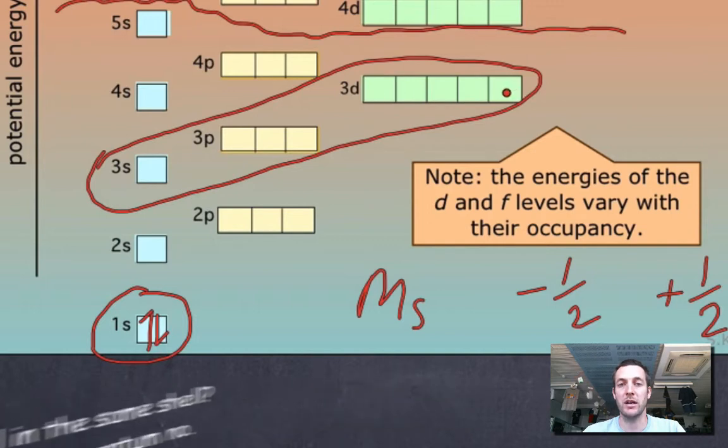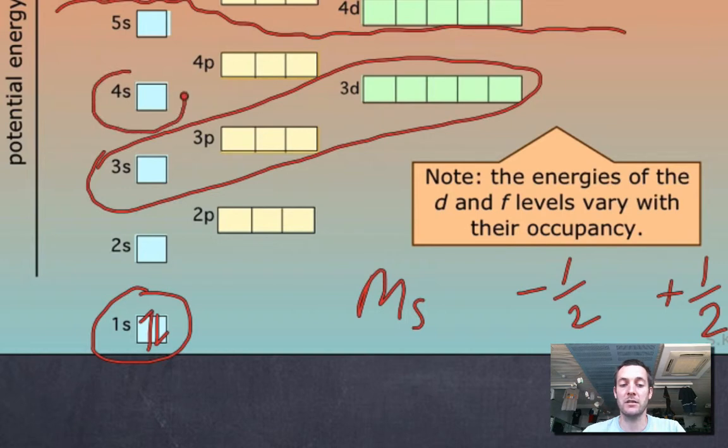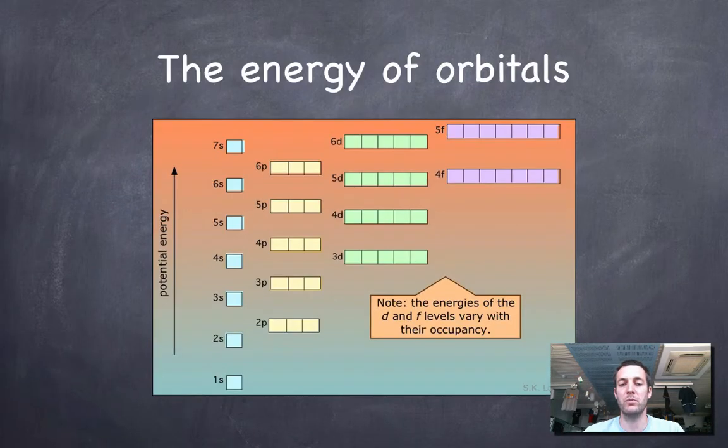They've all got exactly the same energy as one another and they've got almost the same energy as 4s but not quite. 4s is a little bit lower, but annoyingly the energy of the D and F orbitals can change depending on whether they've got electrons in them or not. Which means that the relative energies of the S and D orbitals can actually reverse when there's electrons in here. But we'll worry about that a bit more later when we look at the electron configurations of transition metal ions.